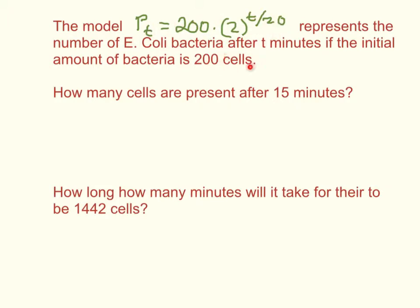We know there were 200 cells to start with because that's the value for p sub zero. We're multiplying that times some value of r. In other words, if it's 2, we're doubling this population, and it looks like it's going to be doubling every 20 minutes. This is our quote-unquote 'for every' factor. You can look back to one of my previous podcasts where I go over this model.